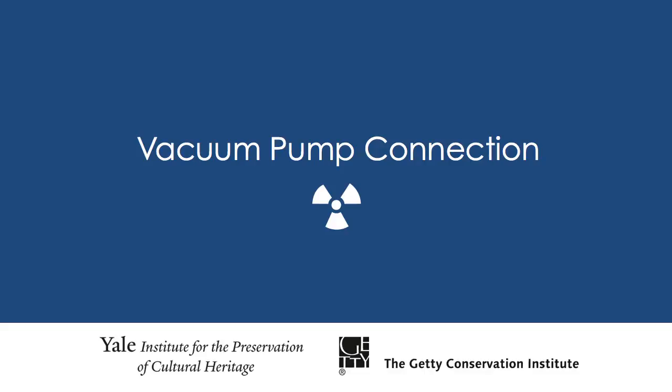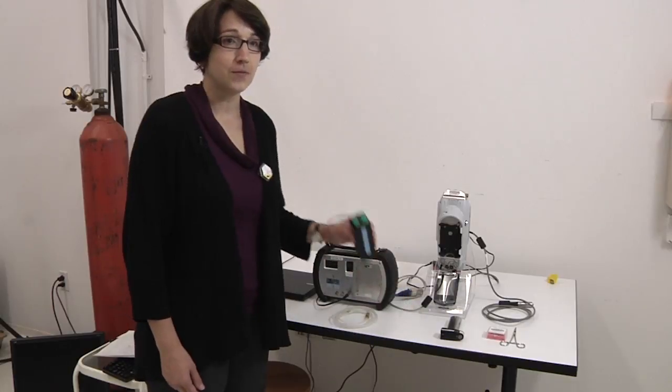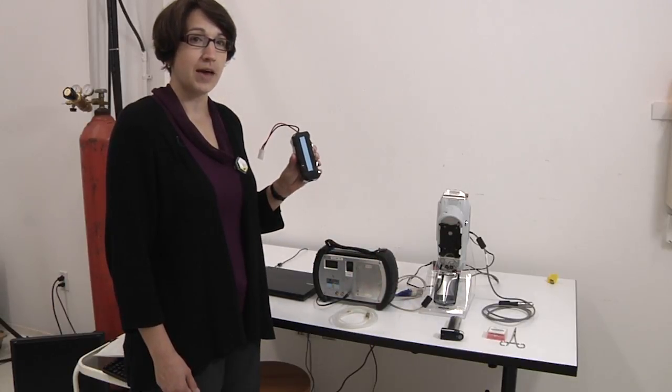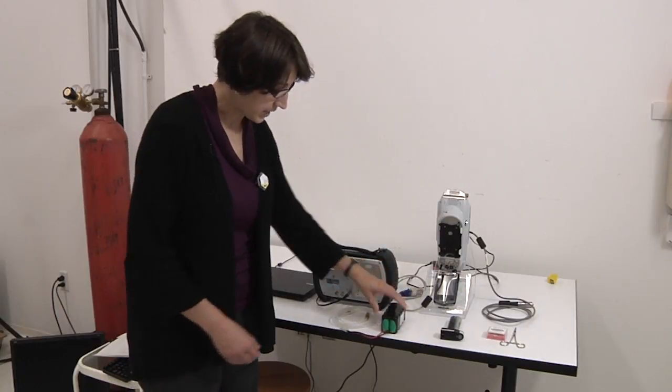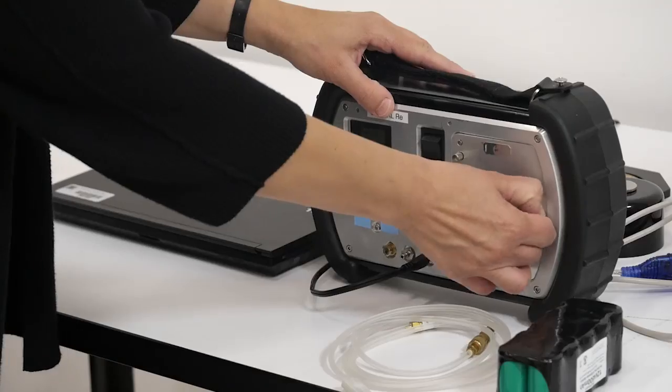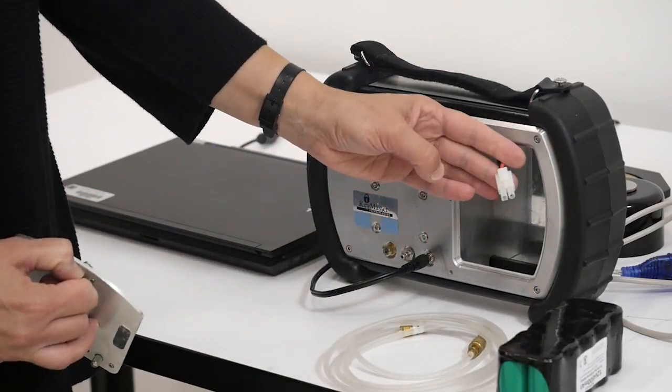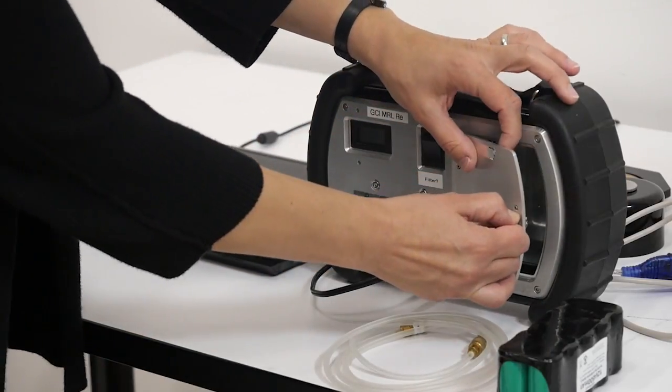Now we're going to connect the vacuum pump to the instrument. The vacuum pump can be powered by a battery. This is very helpful when you don't have access to AC power and when you're traveling. The battery attaches inside the battery compartment. Today we're going to operate off of the AC power.